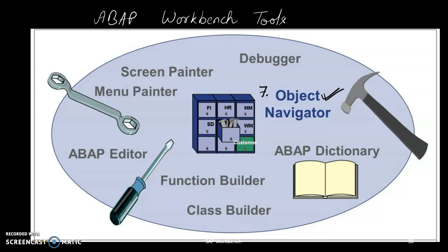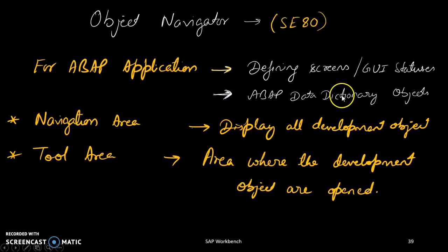The Object Navigator allows you to see everything in a tree structure. If you want to view all the objects you created, or all objects related to an application, in one place using a tree structure, you use the Object Navigator.